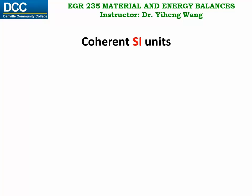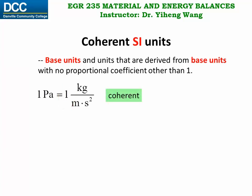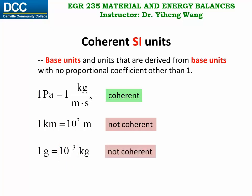Now that we've looked at all the different types of SI units, I want to introduce a very useful concept: the coherent unit. This includes all the base units as well as units derived from base units with no proportional coefficient other than one. For example, one Pascal equals one kilogram per meter second squared — the coefficient here is one, therefore Pascal is a coherent unit. One kilometer is a thousand meters — the coefficient is not one, therefore kilometer is not coherent. Similarly, one gram equals one over a thousand kilograms, so gram is not coherent either.